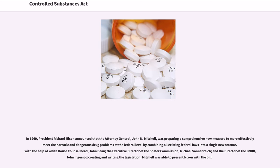In 1969, President Richard Nixon announced that the Attorney General, John N. Mitchell, was preparing a comprehensive new measure to more effectively meet the narcotic and dangerous drug problems at the federal level by combining all existing federal laws into a single new statute. With the help of White House Council Head John Dean, the Executive Director of the Schaefer Commission Michael Sonnenreich, and the Director of the BNDD John Ingersoll creating and writing the legislation, Mitchell was able to present Nixon with the bill.